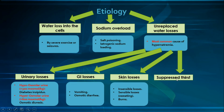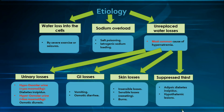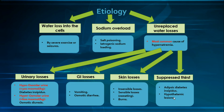The suppressed thirst category: if thirst is decreased, it is called hypodipsia; if absent, it is called adipsia. The two main causes are adipsic diabetes insipidus — absent ADH plus absent thirst, i.e., central DI with absent thirst response due to congenital or acquired CNS lesions — and hypothalamic lesions such as holoprosencephaly, which impair the thirst response with or without central diabetes insipidus.